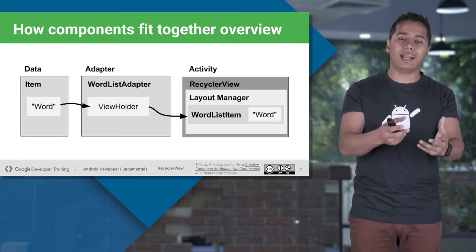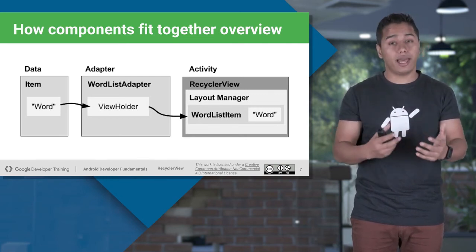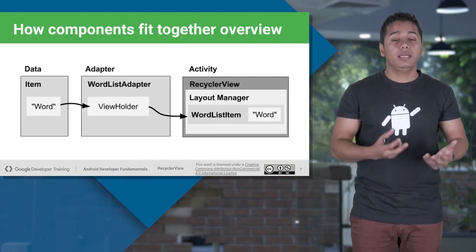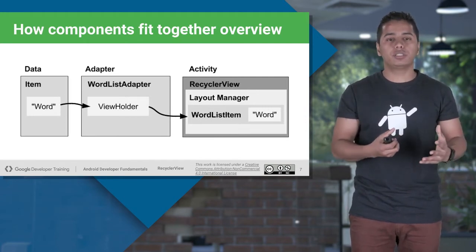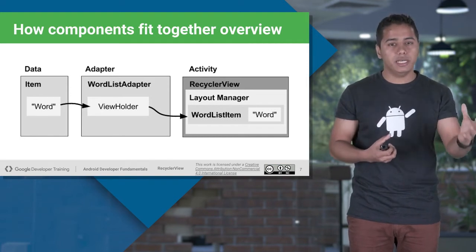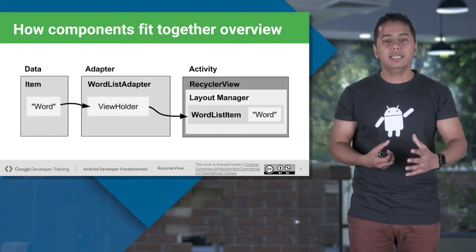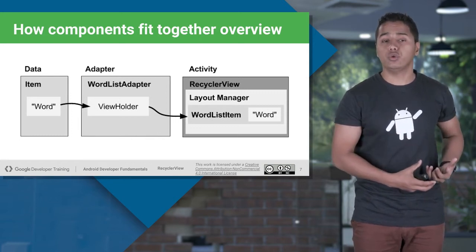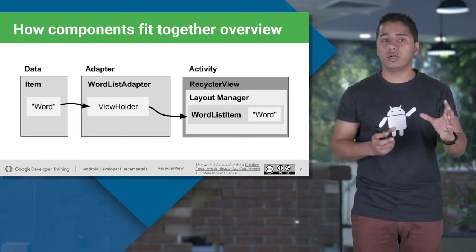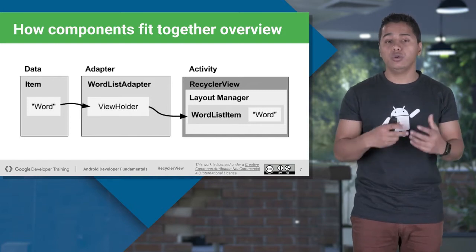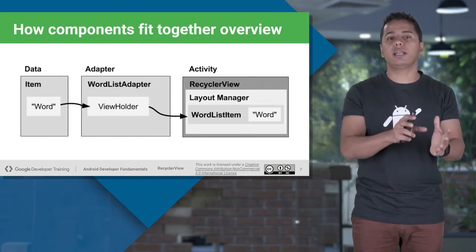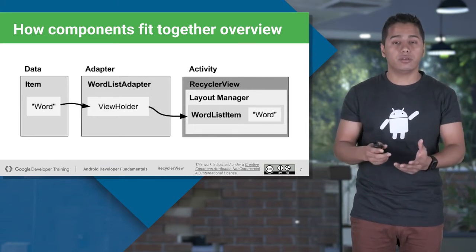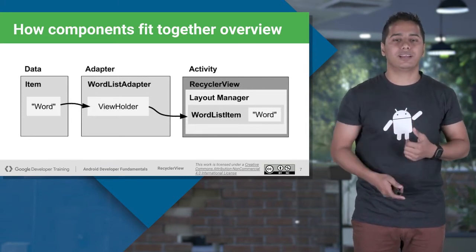Inside your adapter class there will be a ViewHolder. Your adapter class will take inputs as data — whatever data you want to populate — and there will also be an XML layout file which you attach to your adapter. Once you attach your data and XML, and initialize your ViewHolder, then you attach your adapter class to your RecyclerView and you will be able to see your RecyclerView.